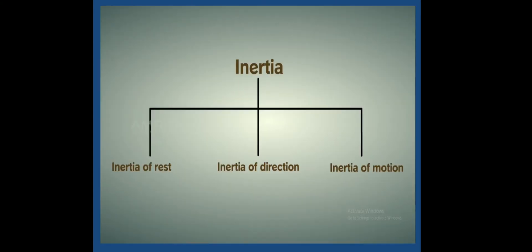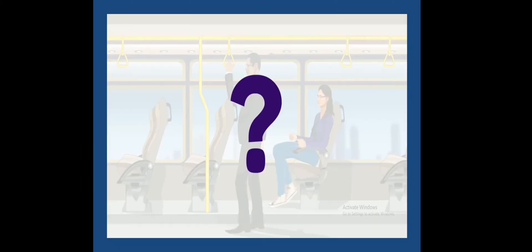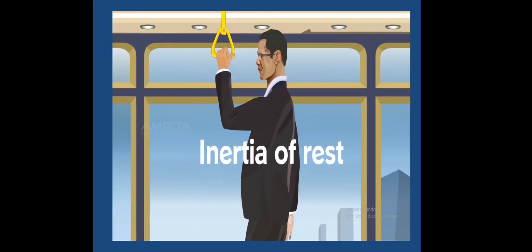There are three types of inertia: inertia of rest, inertia of direction, and inertia of motion. Let's have an example. Certain experiences that we have while traveling in a bus can be explained on the basis of the law of inertia. When a passenger is standing in a stationary bus that suddenly moves, the movement pushes the passenger backward. Why does this happen?